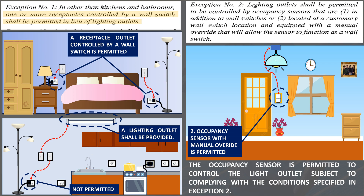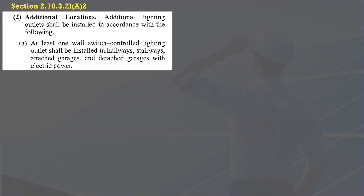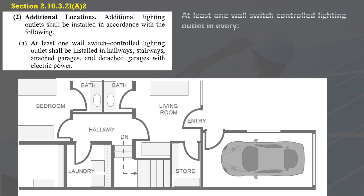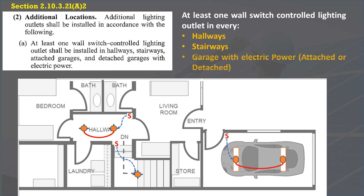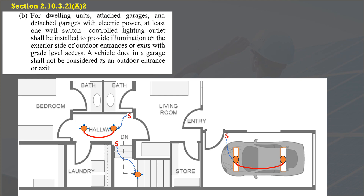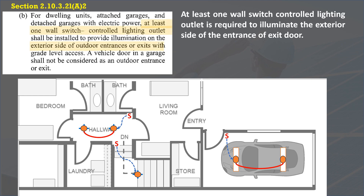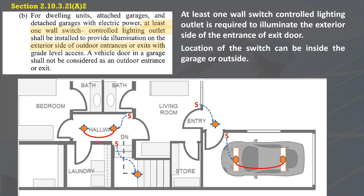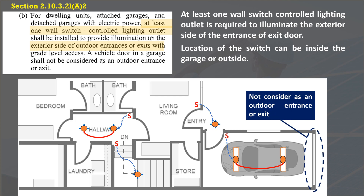Occupancy sensors must be equipped with a manual override. In addition, at least one lighting outlet controlled by a wall-mounted switch is required in hallways, stairways, and garages with electric power, as stated in subsection 2.10.3.21(a)(2)(a). Per subsection 2.10.3.21(a)(2)(b), at least one wall switch-controlled lighting outlet must be installed to provide illumination on the exterior side of outdoor entrances or exits with grade-level access. The vehicle door is not considered an outdoor entrance or exit.